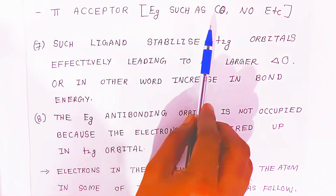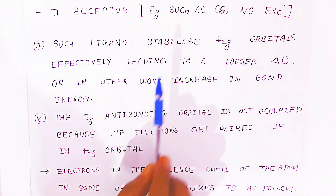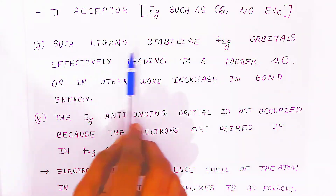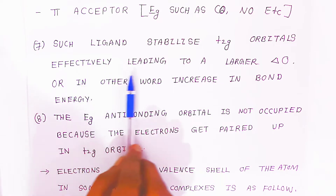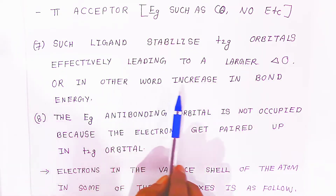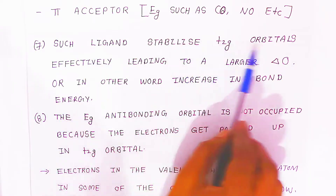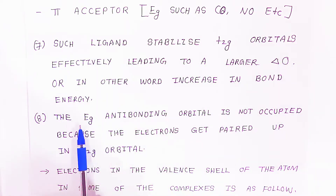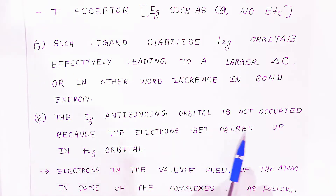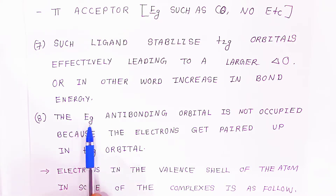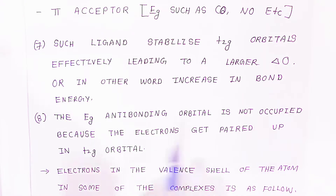For example, carbonyl and nitrosyl are ligands that stabilize t2g orbitals effectively, leading to a large delta O, or in other words, they increase the bond energy. The eg anti-bonding orbital is not occupied because the electrons get paired up in t2g orbitals. The electrons in the valence shell of the atom in some of the complexes are as follows.